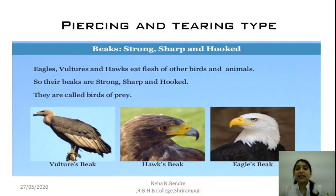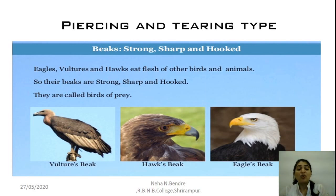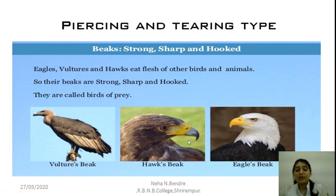Next is the piercing and tearing type of beak, found in carnivorous birds which prey on the flesh of other birds and animals, pulling out the flesh to eat it. For tearing flesh, they need a very sharp beak. Examples include eagles, vultures, and hawks. Their beaks are strong, sharp, and hooked, with a special hook at the tip. They are called birds of prey.